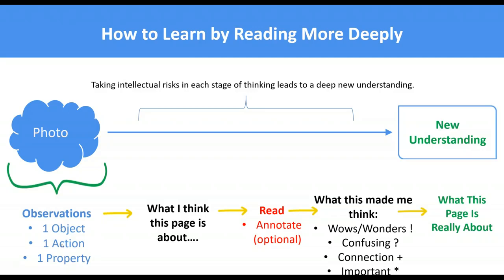We try to observe one object, one action, and one property. For example, you could be reading the Magic School Bus together: what's an object in the scene? What's an action happening in that scene? What's a property — like cold, warm, fluffy, hard? We haven't read anything on that page yet — we're just looking at the photo or illustration. Now we're going to be curious. We're going to think about what this page may be about. The student might say: based on that object, action, and property, I think this page is about weather. Then let's actually read that page or section and find out what it's really about.